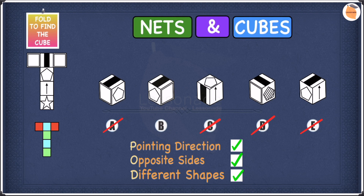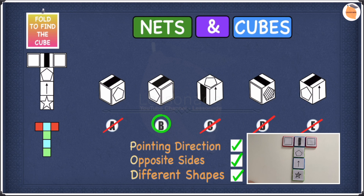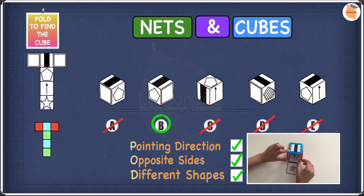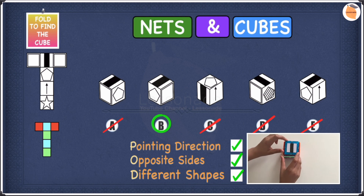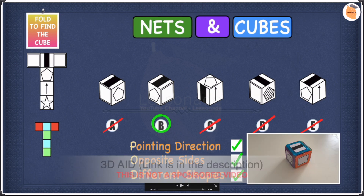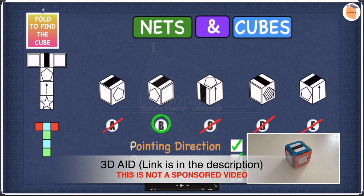So our answer to this question is B. Let's check by folding the net — and as you can see, B is correct. There is also an aid for constructing the cube to gain a better understanding of how the net folds, and the link is in the description below and in the comments section.